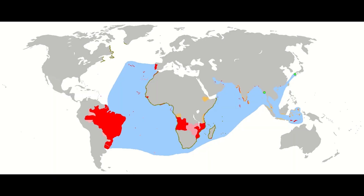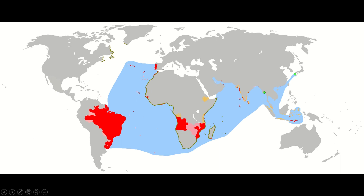On the map, everything in red — all the little red dots — are controlled by the Portuguese. Portugal is here, Spain is here, and the Portuguese explored the coast of Africa all the way into Asia. Columbus is going to go to Haiti, and the Portuguese will conquer what we know as Brazil. The Portuguese had this vast empire from which they collected natural resources: gold, slaves, and spices.